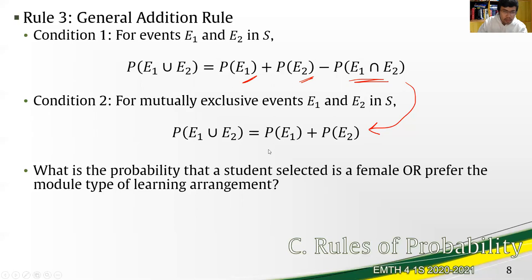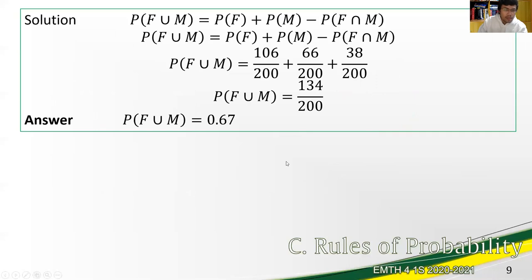Example, what is the probability that the student selected is a female or preferred module type of learning arrangement? Take note of the or. We have the first condition, thus the formula, the probability of all females plus the probability of all preferring module learning arrangement minus the intersection of the female and the module learning, or those who are females preferring module learning arrangement. That would be 106 plus 66 minus 38. That would be 134 over 200 or 0.67.